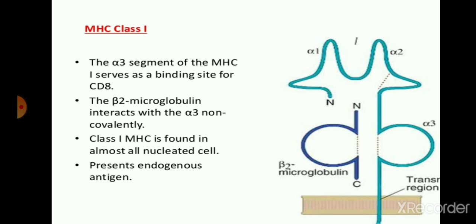Whenever alpha 1 and alpha 2 bind to the peptide of the antigen, they recognize the foreign material or self material and trigger the formation of cytokines and chemokines by joining the T cell receptor. Beta-2 microglobulin interacts with alpha 3 non-covalently. MHC class 1 is found in almost all nucleated cells. Basically MHC class 1 molecules are found in all nucleated cells present in the immune system, and they also present endogenous antigen.